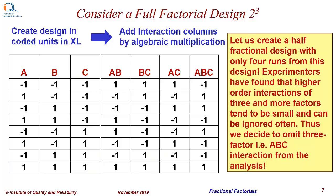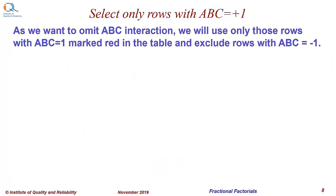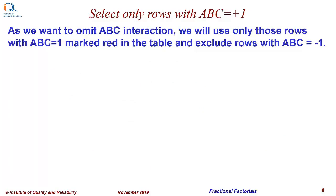Let us now create a half fractional design with only four runs from this design. Experimenters have found that higher order interactions of three and more factors tend to be small and therefore can often be ignored. Thus, we decide to omit the three-factor interaction, that is the ABC interaction here. Therefore, we select only those rows with ABC equal to plus 1. We want to omit ABC interaction as it is expected to be small.